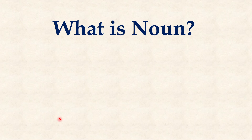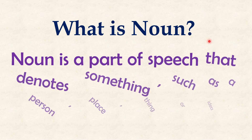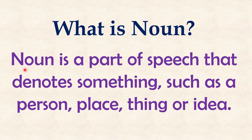Point number one: What is a noun? Noun is a part of speech that denotes something such as a person, place, thing, or idea. Simply keep it in your mind that the name of a person, place, thing, or idea — that is what we call a noun.